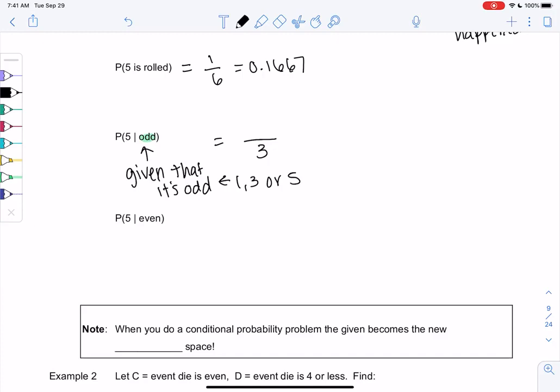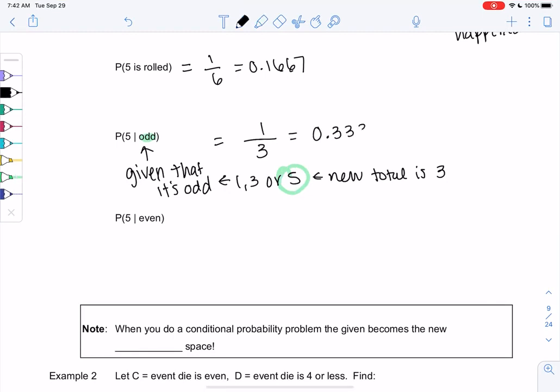So the given is now saying we don't have the whole entire dice. We only have 3 sides. So the new total is 3. And then how many of those are 5? Just 1. So 1 out of 3, or 0.3333.